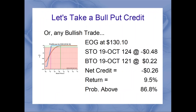Let's take a sample trade. Earlier this morning, even though the market was a little tumultuous, I logged on to Power Options, went into bull put credit, and pulled up my weekly bull put search. The one that came up at the top was EOG Resources trading at around 130.10. Our bull put was selling the October 19th $124 put for $0.48 and buying the October 19th $121 put at $0.22 — a simple bull put spread, slightly out of the money. That gave us a $0.26 net credit on a three-point spread, a 9.5% return off our true risk of about $2.74, with an 86.8% theoretical probability that EOG would remain above $124 in the next nine days.